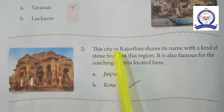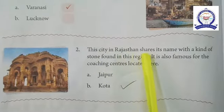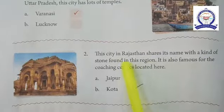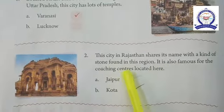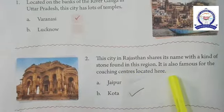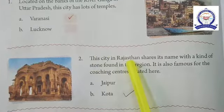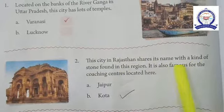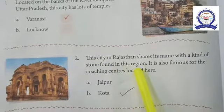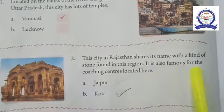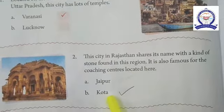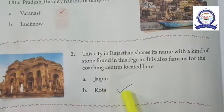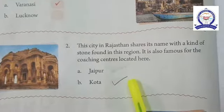Number two: this city in Rajasthan shares its name with a kind of stone found in the region, and it is also famous for the coaching centers located here. The answer is option B — Kota.